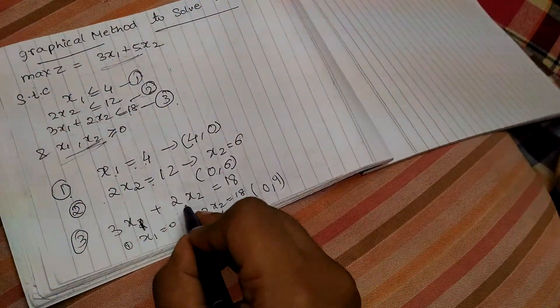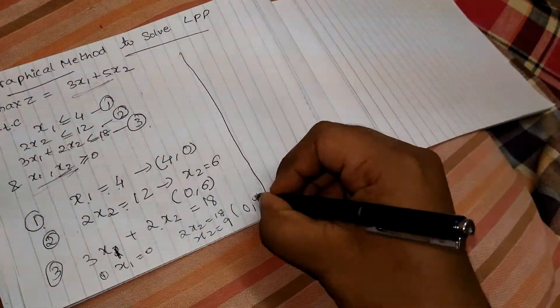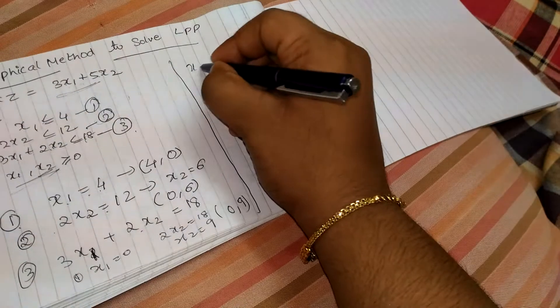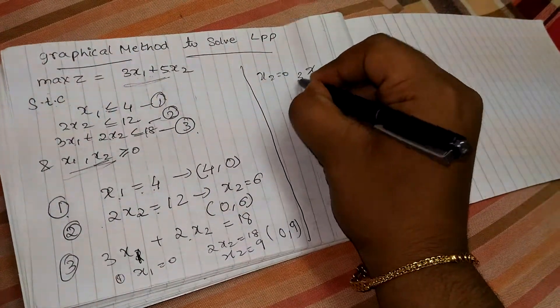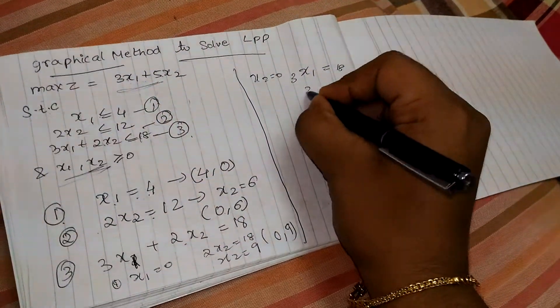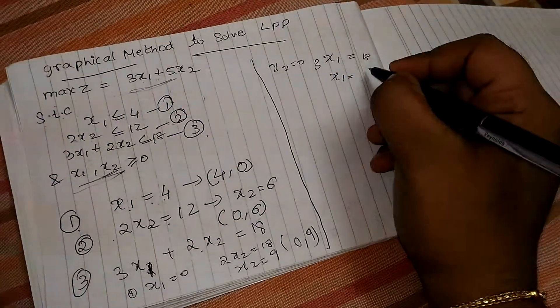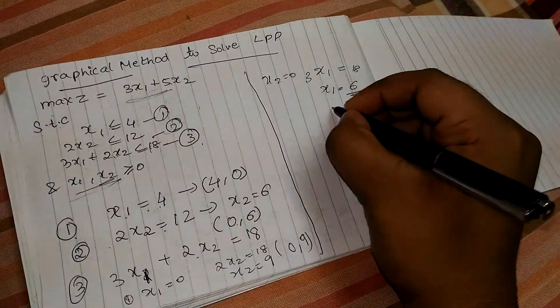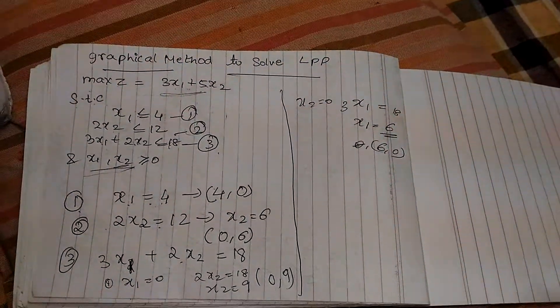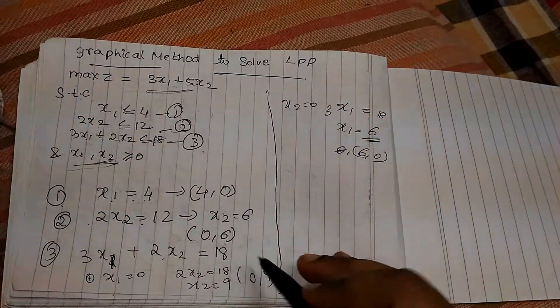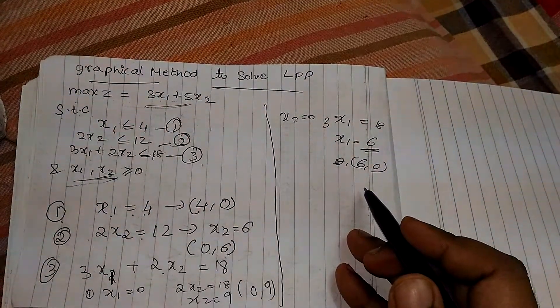Next we will put x2 equal to 0 in this equation. And x2 equal to 0, 3x1 equal to 18, x1 equal to 6. Now we have found out all the points. Now one thing remaining is we need to plot these points on the graph.